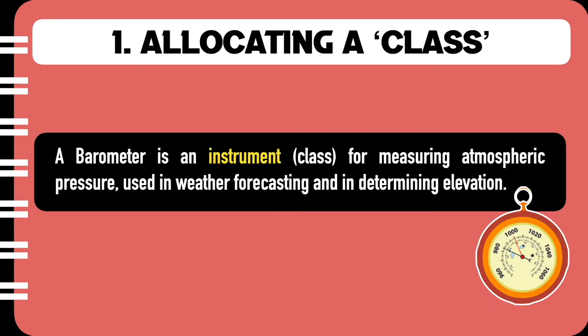Moving to the first way: allocating the term to a class. A barometer is an instrument — this is where we allocate the barometer to the class — for measuring atmospheric pressure, used in weather forecasting and in determining elevation.